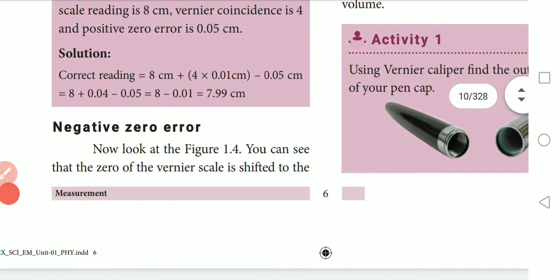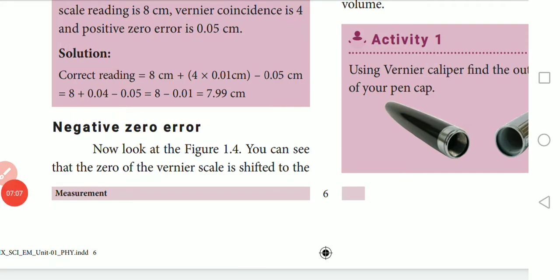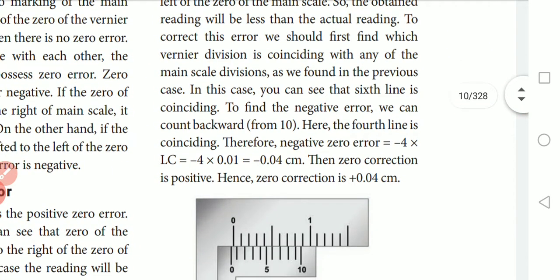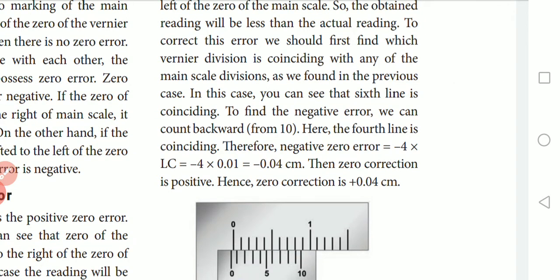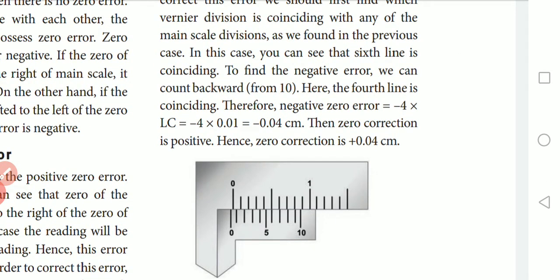For a negative zero error, look at figure 1.4 — you can see that the zero of the vernier scale is shifted to the left of the zero of the main scale. The obtained reading will be less than the actual reading. To correct this error, find which vernier division is coinciding with any main scale division. In this case, you can see that the sixth line is coinciding.